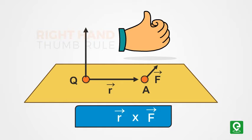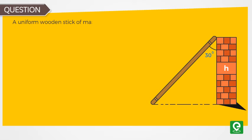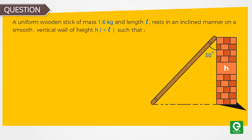Let's take an example to understand this concept better. Question: A uniform wooden stick of mass 1.6 kg and length l rests in an inclined manner on a smooth vertical wall of height h greater than l such that a small portion of the stick extends beyond the wall.